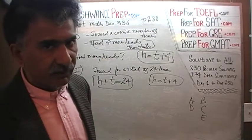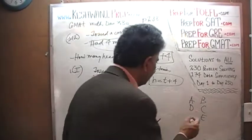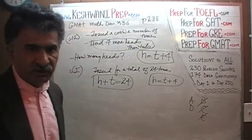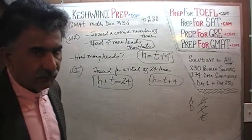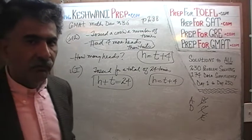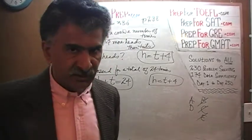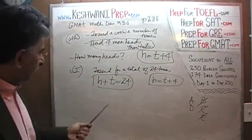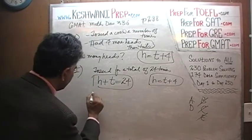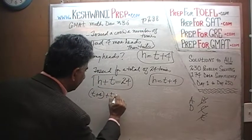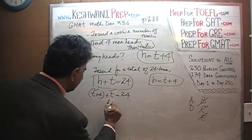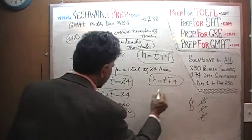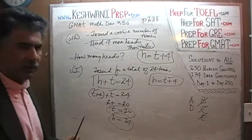The answer cannot be B, C, or E — it will have to be either A or D. In the real exam, we are done. But for learning purposes, let's solve it: H = T + 4. Substituting: T + 4 + T = 24, so 2T = 20, T = 10. Therefore H = 14. Ten tails and fourteen heads.